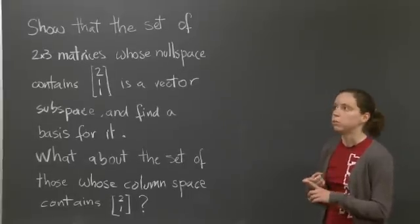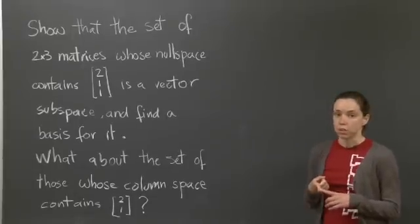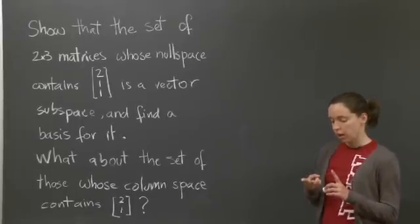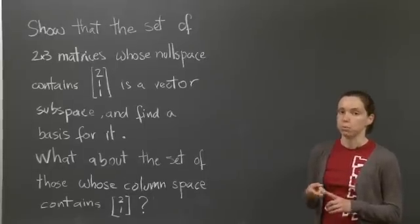One is that if two matrices, well, two vectors, in this case, two matrices, are in that space, then their sum is in that space. And if you take a vector, in this case a matrix, and you multiply it by a scalar, you will still be in the space.